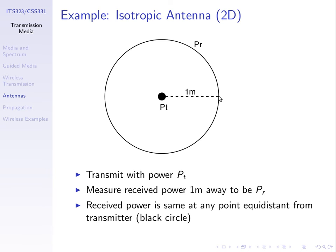Let's consider an isotropic antenna and put some values to it. The black dot in the middle is the location of our isotropic antenna. When it transmits a signal, that signal goes in all directions with equal strength. If I'm one metre away at some point and I measure the received power, we transmit with power PT and measure the received power to be PR. By definition of an isotropic antenna, measuring at a different point also one metre away gives the same power PR — and the same at all points on that circle.